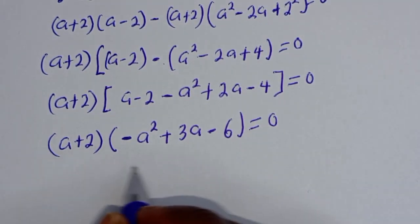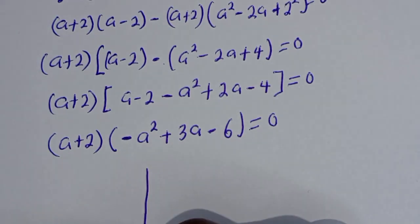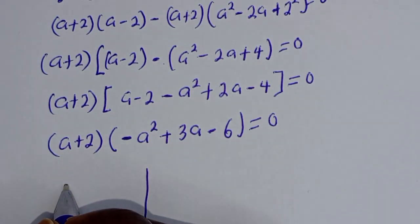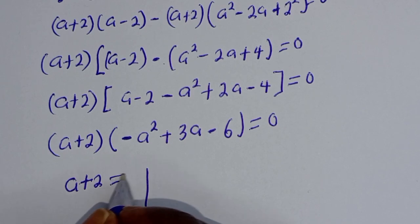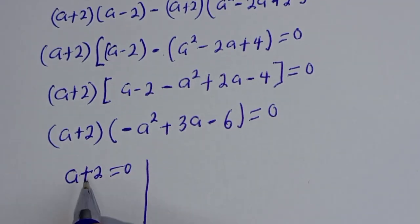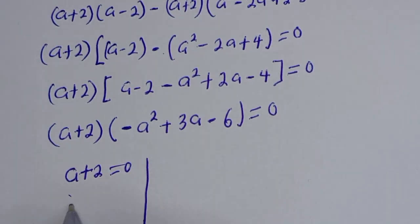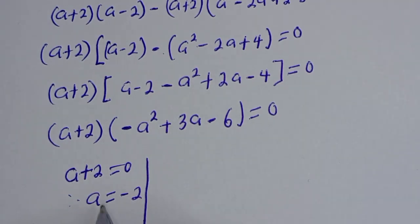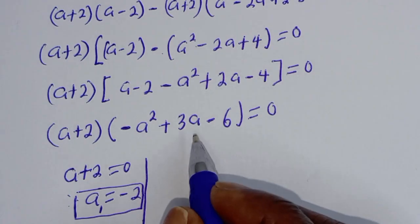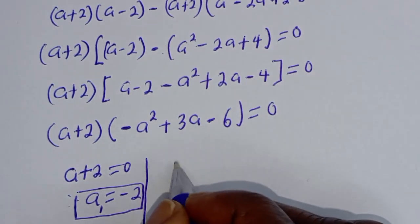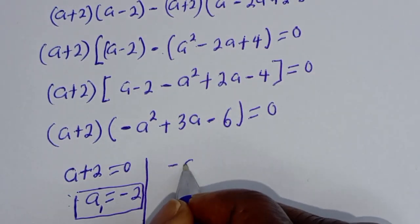There are two cases. The first case is a + 2 = 0, therefore a is equal to minus 2. Let's call this a₁.